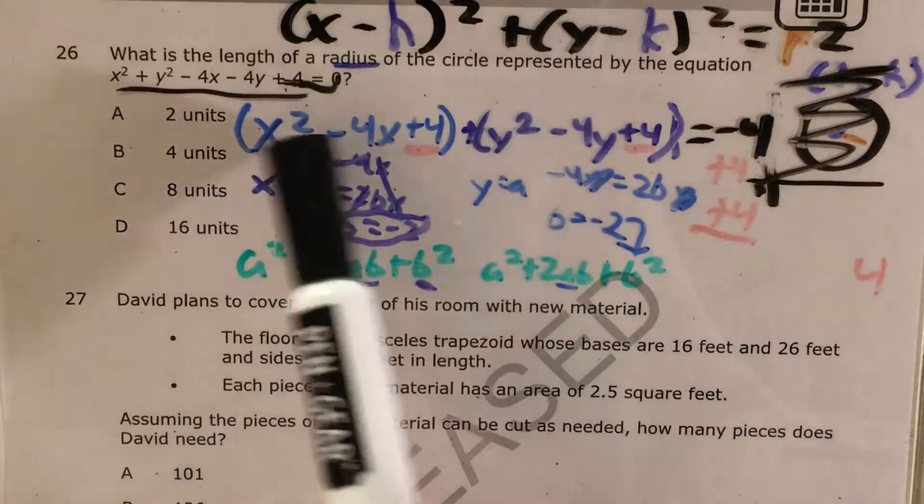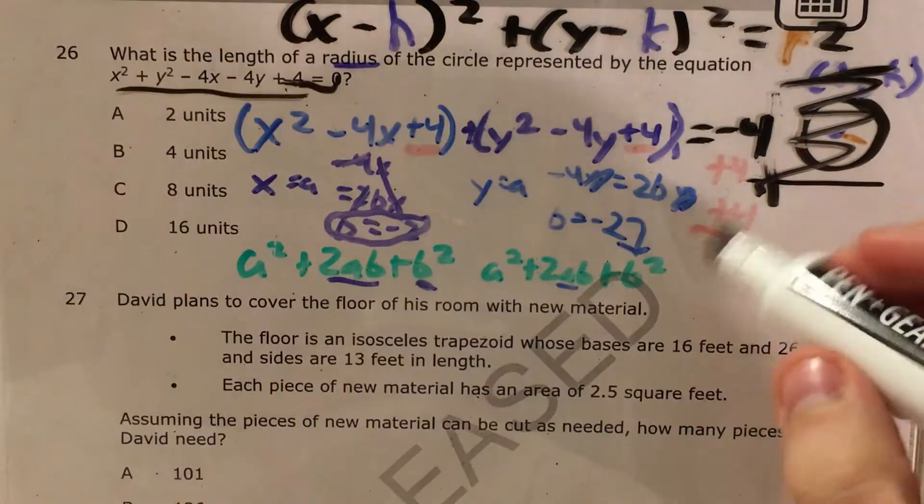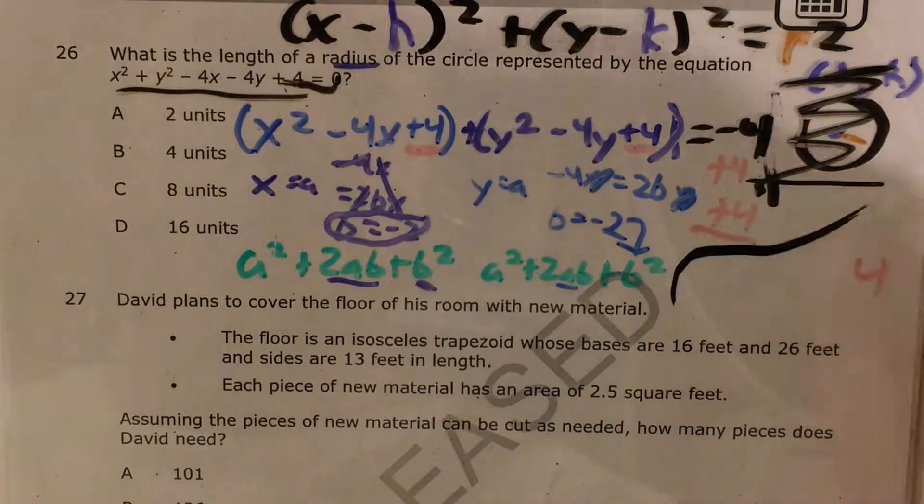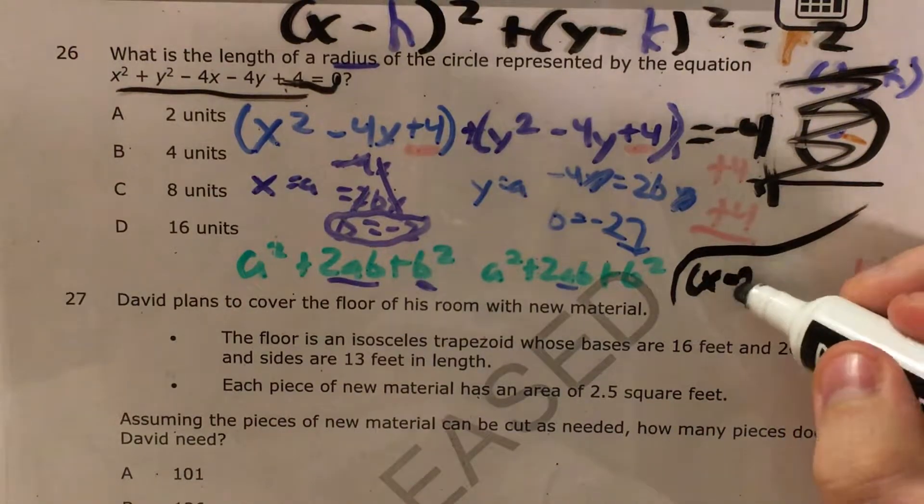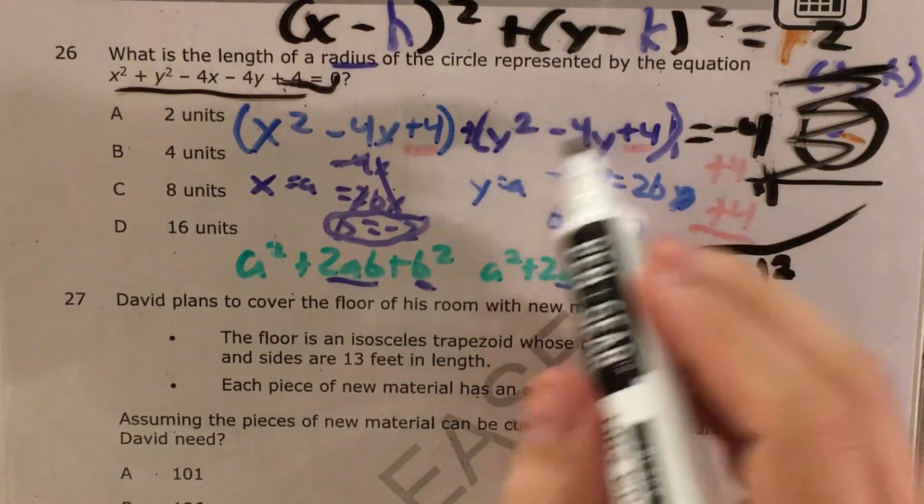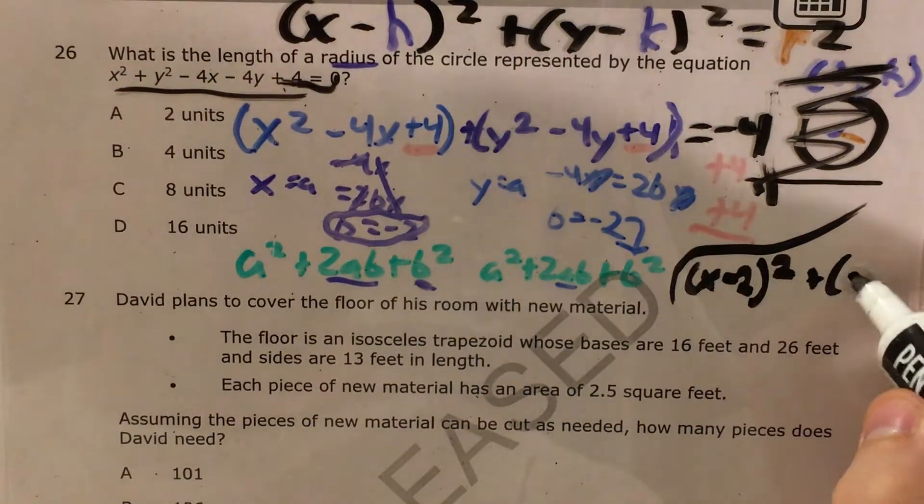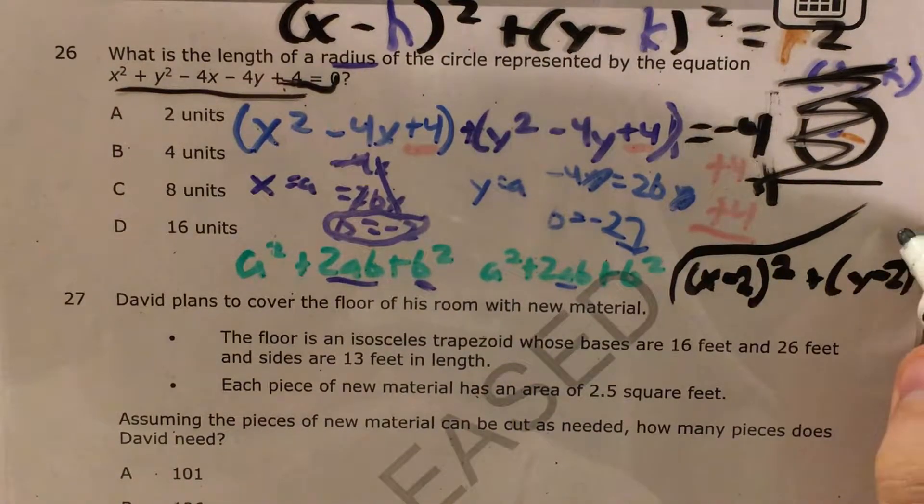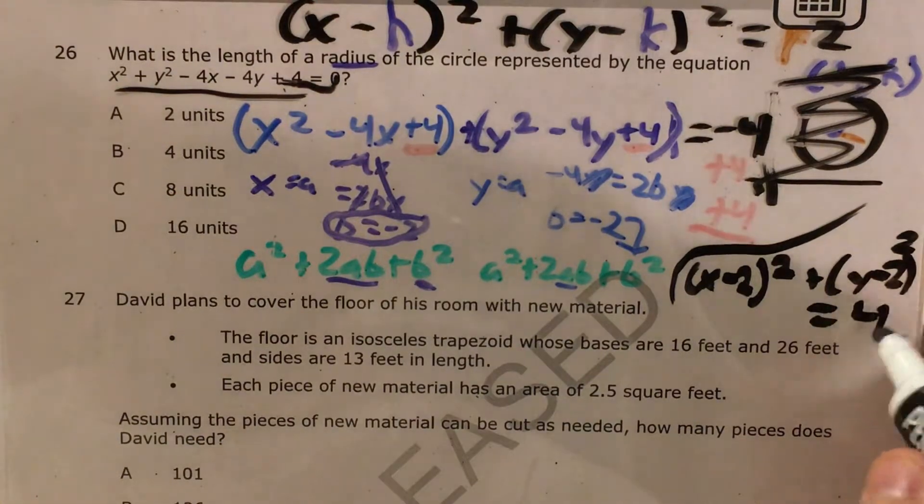Because now I'm going to take this and turn it into x minus 2 all squared. I'm going to take this stuff and turn it into y minus 2 all squared. I know that this equals 4.